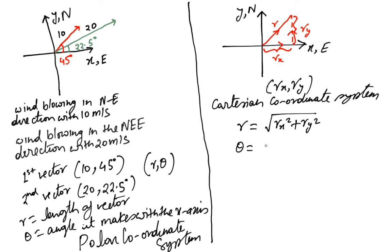Similarly, using simple trigonometric relations, we can see that Theta equals tan inverse of Ry over Rx, and vice versa. We can also write Rx equals R cosine Theta and Ry equals R sine Theta. These are all because of trigonometric relations.